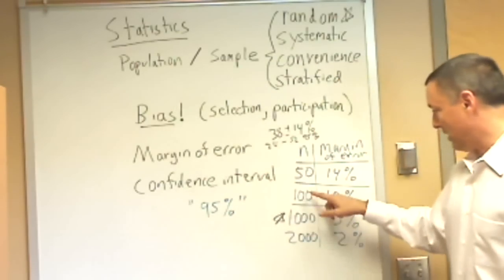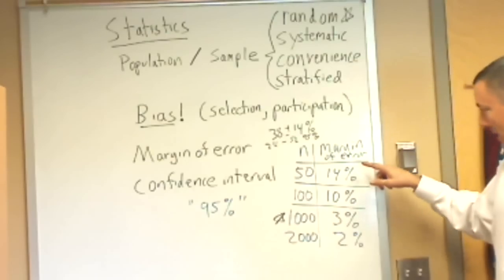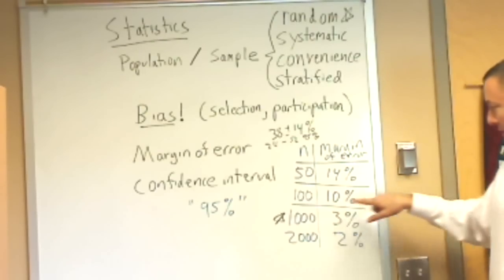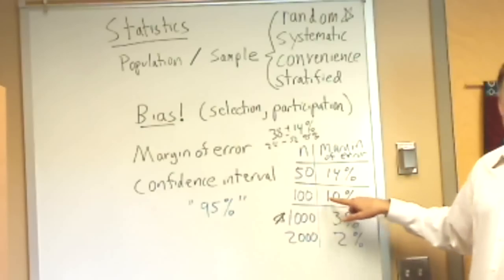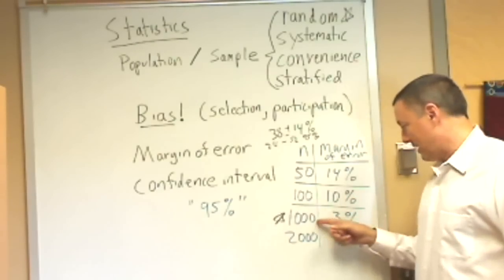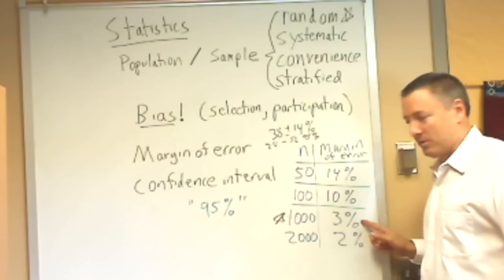I put a few numbers down here: 100, 1000, and 2000. We see that as we would expect, the margin of error drops. We have 14 percent with 50, 10 percent with 100. That's still pretty bad - still pretty bad to think your errors are plus or minus 10 percent.